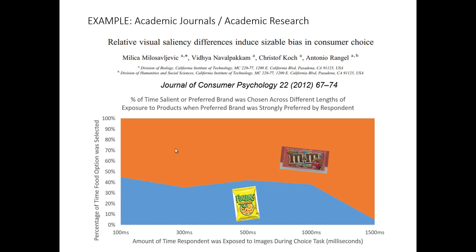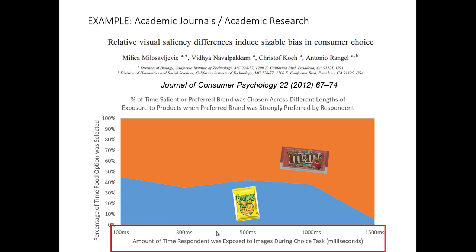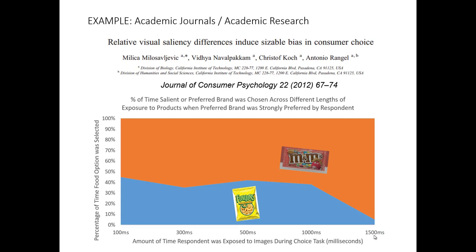With these two products presented to individuals, the idea was to see which product they would choose. In the long run, since we knew they preferred peanut butter M&Ms, you would expect them to always select M&Ms and not Funyuns. However, that wasn't the case when individuals were given only a short amount of time to make their choice. On the x-axis, you'll see a series of times in milliseconds — so 1000 represents one second. There were five different time lengths: 100 milliseconds meant a tenth of a second, whereas 1500 milliseconds gave the person 1.5 seconds to decide.